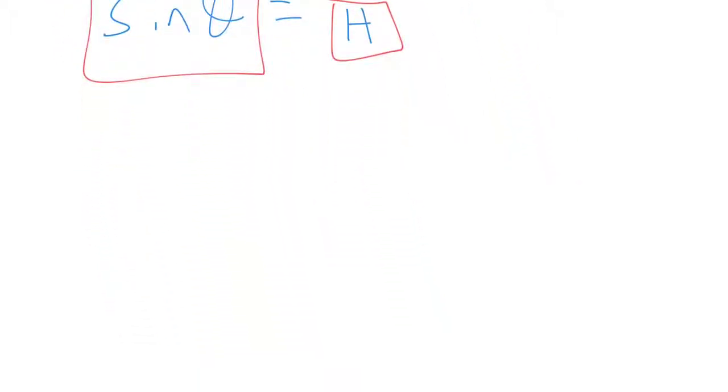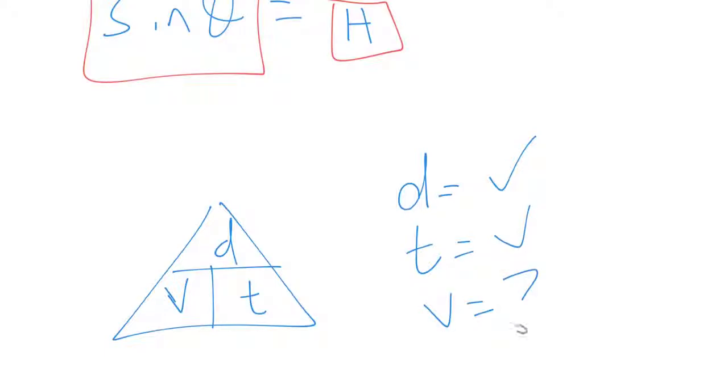Give you an example with our velocity equals distance over time situation. If we know the distance, so we've got a value for that, and if we've got the time, we're trying to find the velocity. What we would then do is cover over the one we're trying to find out. And what's left is a hint about how we would create the formula for it. So this would say that the velocity is the distance over the time. So V equals D over T.